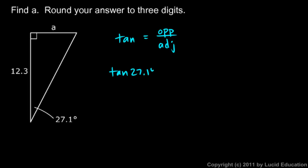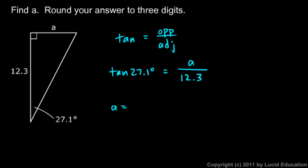Applying that to this triangle: the tangent of 27.1 degrees equals the opposite side a over the adjacent side 12.3. Rearranging to solve for a: a equals 12.3 times the tangent of 27.1 degrees, and on the calculator that comes out to 6.29.